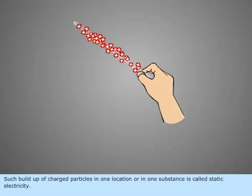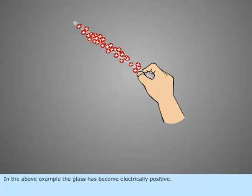Such buildup of charged particles in one location or in one substance is called static electricity. In the above example, the glass has become electrically positive.